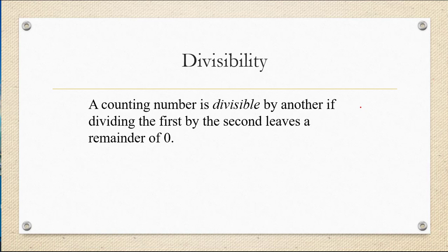So for example, we would say that 10 is divisible by 5 because 5 goes into 10 twice with a remainder of zero.